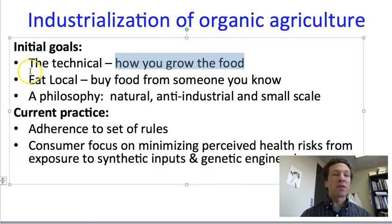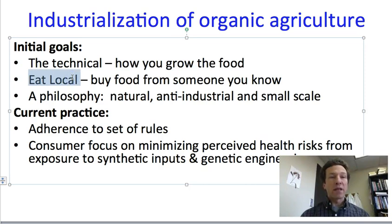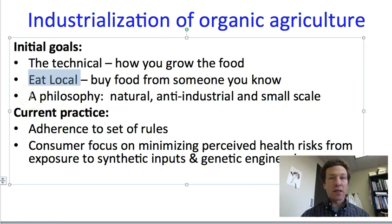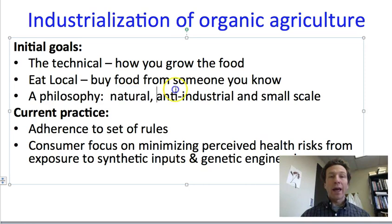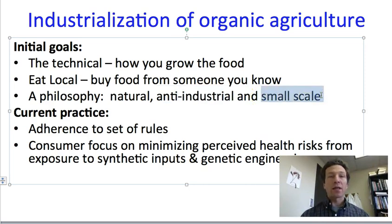There was also a philosophy of eating locally, referring to supporting farms in one's immediate vicinity and if possible knowing the person who was growing the food. There was a general philosophy implicit in early organic agriculture that agriculture should be natural and, as such, anti-industrial — keeping factories as far from the process as possible. There was a feeling that small-scale agriculture was perhaps morally superior, or at least more desirable, than large-scale farms.